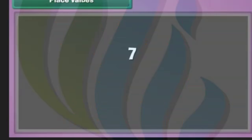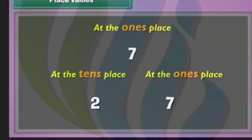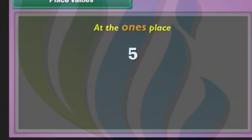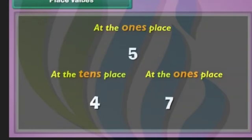Single-digit numbers have only one digit at the ones place. Two-digit numbers have one digit at the ones place and another at the tens place. Number five has only one digit, five, and it is at the ones place. Number forty-seven has two digits, four and seven. Seven is at the ones place and four is at the tens place.